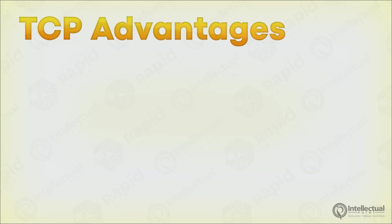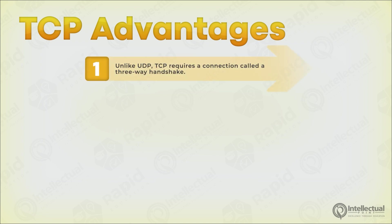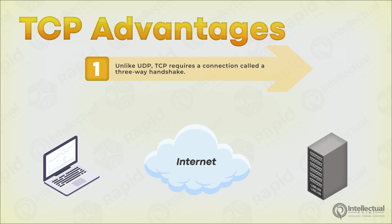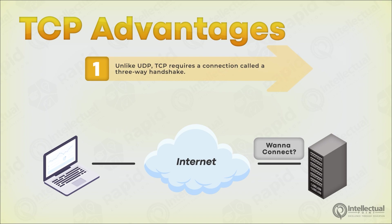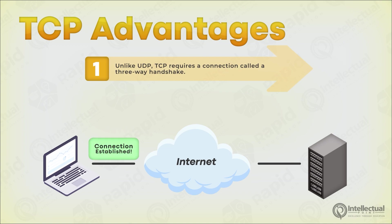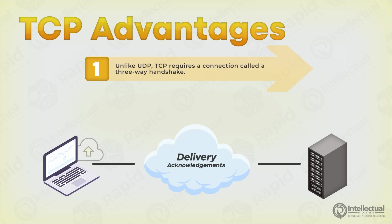TCP consists of a few features that make it much more reliable than UDP. Unlike UDP, TCP requires a connection — this is called a three-way handshake. First, the initiator will ask the acceptor if a connection could be made. The acceptor will reply to this request and send it back to the initiator. When the initiator receives the response, it will send a packet back to the acceptor stating that the connection has been established. This allows the use of delivery acknowledgements — when data is sent from one host to another, the receiver will recognize that it got that data.